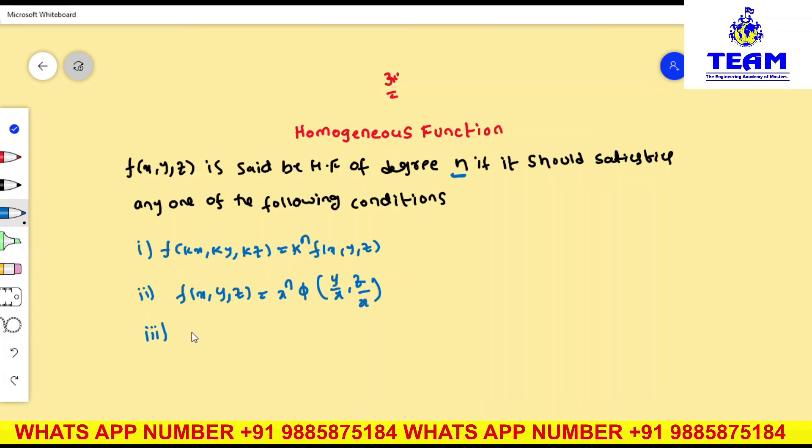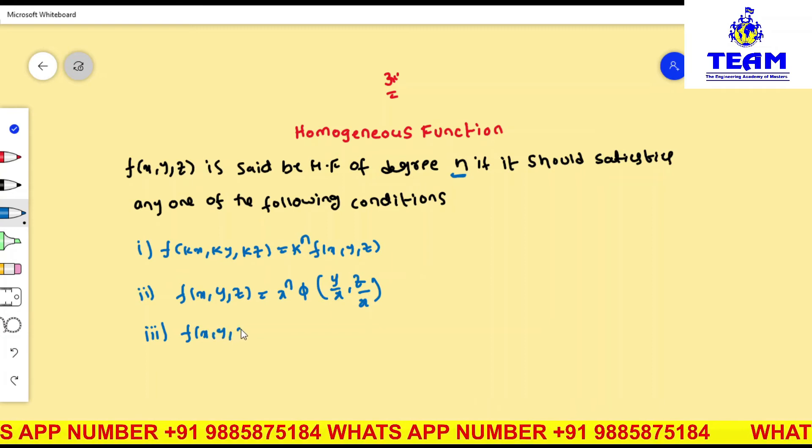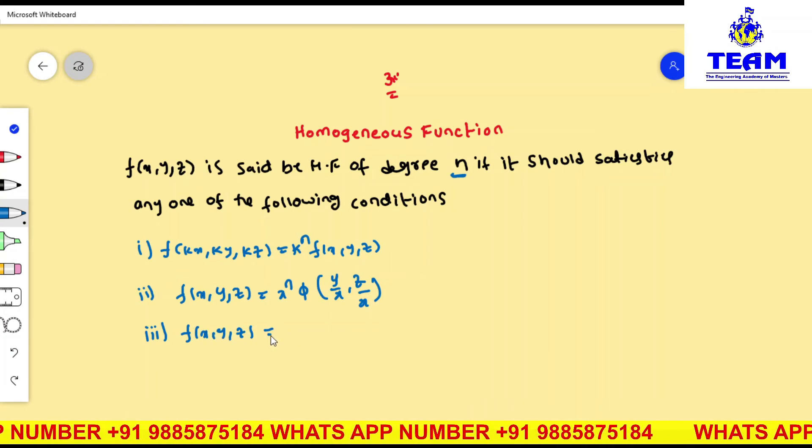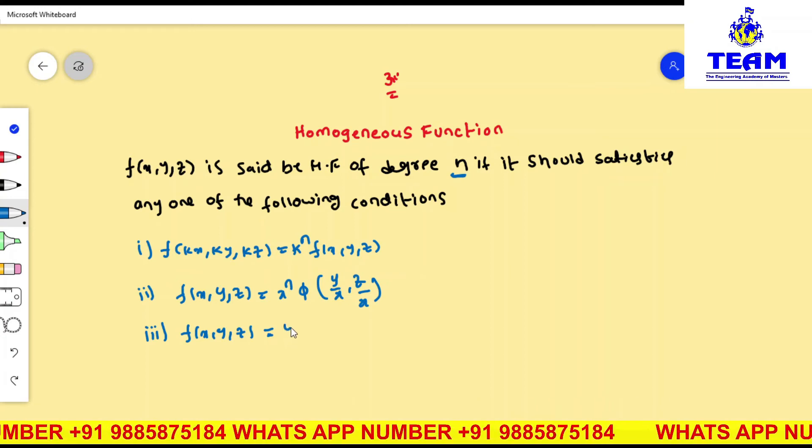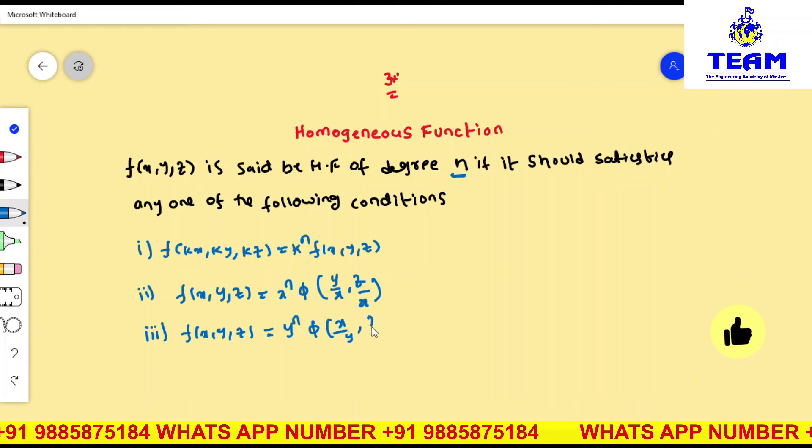Third form: if the given function f(x, y, z) is said to be homogeneous function of degree n, if I have taken y common, then you will have y to the power of n into phi of x by y, z by y.